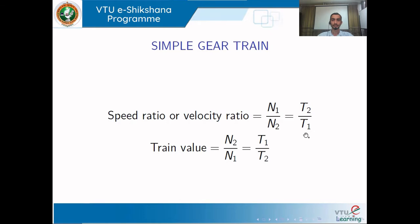The speed ratio or velocity ratio is given by the speed of the driver divided by the speed of the driven, which equals the ratio of the number of teeth on the driven divided by number of teeth on the driver. So N1 by N2 equals T2 by T1. The train value is the reciprocal of the speed ratio, given by the output speed divided by the input speed, which equals T1 by T2.